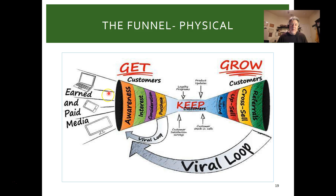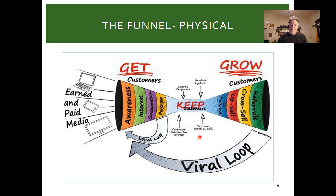For more on AIDA, look up the movie Glengarry Glen Ross with Alec Baldwin. On the 'get' side, you'll use earned media like PR and news, and paid media like billboards, TV, and radio ads. The 'I' and 'C' are critical — interest generated through the internet, and consideration through sampling or a product test drive. The 'keep' is very critical because it's the cheapest customer you have, and keeping them a long time matters.